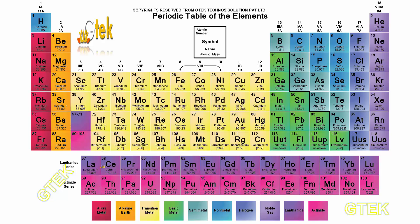These are all alkali metals, these are all alkaline metals, these are the transition metals, here are some basic metals, these are all semi-metals, these are all non-metals, halogens, noble gases, lanthanides, and this one is actinides.